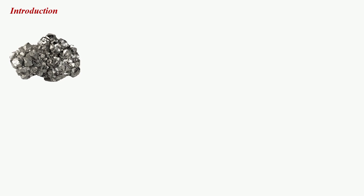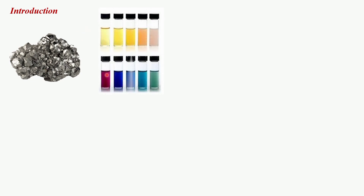Let's take a closer look at what happens when silver is transformed into silver nanoparticles. Bulk silver is the metal we're all familiar with — shiny, gray, and solid. But when silver is turned into nanoparticles, the color changes. It can exhibit a range of colors from yellow to red to green. This color change is due to the phenomenon known as surface plasmon resonance, where electrons on the surface of the nanoparticles resonate with specific wavelengths of light.